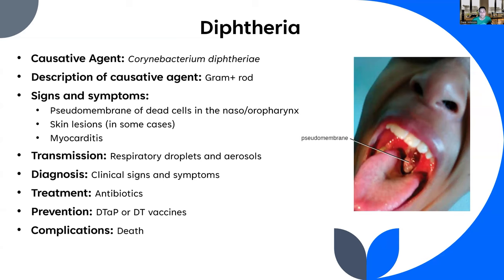Diagnosis is based on clinical signs and symptoms — there really aren't any widely available tests, and we don't see diphtheria much, thank goodness. Treatment is antibiotics. Prevention — and the reason we don't see this — is the DTaP vaccine: diphtheria, tetanus, and acellular pertussis. You get a series of these as part of your childhood vaccination schedule. You can also get re-upped on just the diphtheria and tetanus (DT) vaccine. Complications include death — this is a gruesome disease — and I worry that the anti-vax movement could allow it to come back.